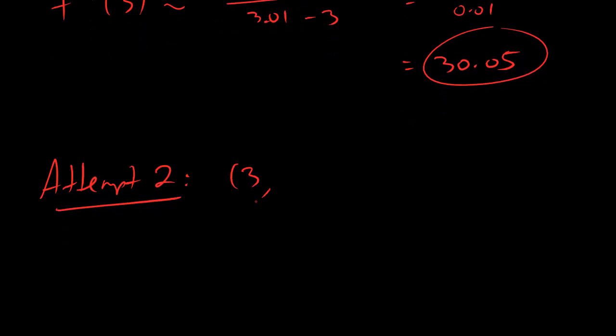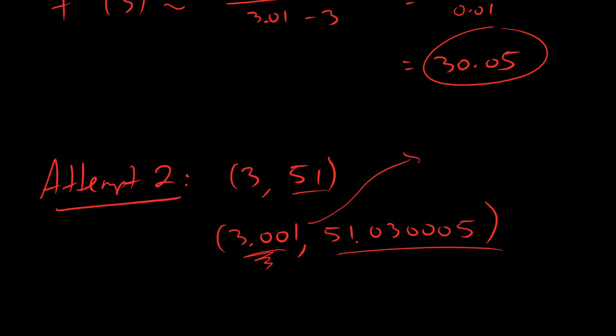And for attempt two, we're going to keep the 3,51 point, but now we're going to pick a point that's even closer. Let's pick 3.001. And then it turns out that our y value is going to be 51.030005. Glorious. And remember, dudes, I'm just getting these y values by plugging these numbers, in this case 3.001, into the function that was given. f of t equals 5t squared plus 6.